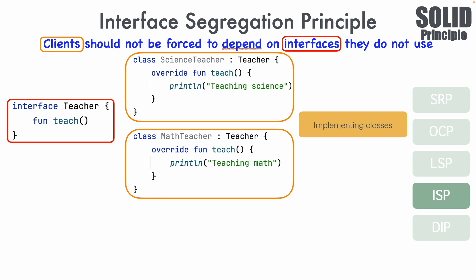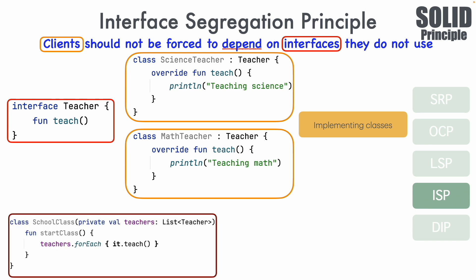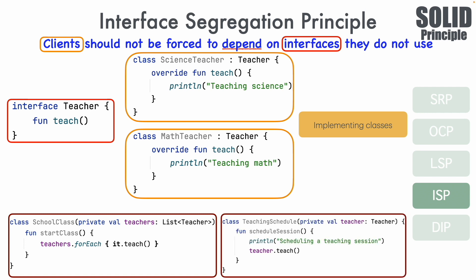There is another kind of client relationship that is not a direct implementation of the interface. For example, a class called SchoolClass takes a list of teachers as an argument and has a function called startClass, which iterates over teachers and invokes the teach function. Similarly, a class called TeachingSchedule also takes a Teacher interface argument. Both SchoolClass and TeachingSchedule don't implement Teacher but use it, so they are dependent components of the Teacher interface.